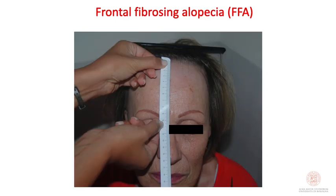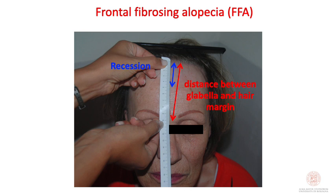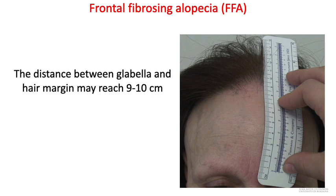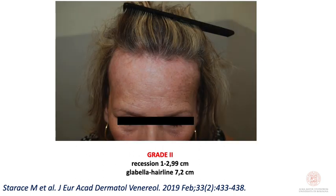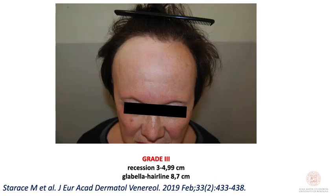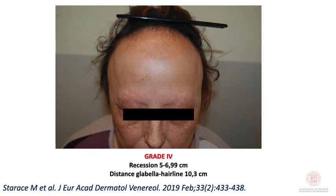Another way to classify the severity of FFA is to measure the recession by the distance between the glabella and the hair margin. In severe cases, this distance can reach 9 to 10 cm. We classify FFA into 4 degrees: grade 1 — recession less than 1 cm; grade 2 — recession 1 to 3 cm; grade 3 — recession up to 5 cm, with glabella-to-hairline distance reaching 10 cm.